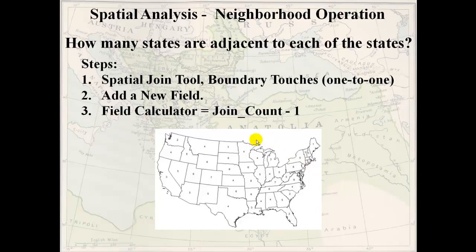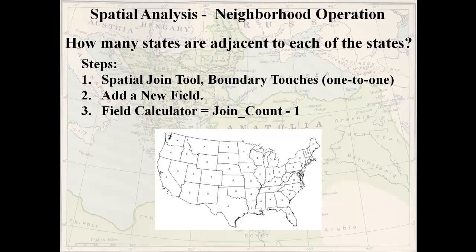Is this a good map or a bad map? You might want to symbolize it so states with more adjacent states have a darker color and states with fewer have a lighter color. This sends a message — back east where states are smaller, the average number of adjacent states is probably higher than out west where states are larger. Symbolizing with a color gradation would reveal that pattern, which you could then investigate further by asking why.